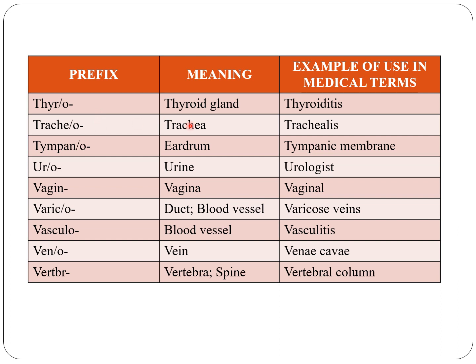Tracheo indicates trachea, for example trachealis. Tympano indicates eardrum, for example tympanic membrane. Uro indicates urine, for example urologist.